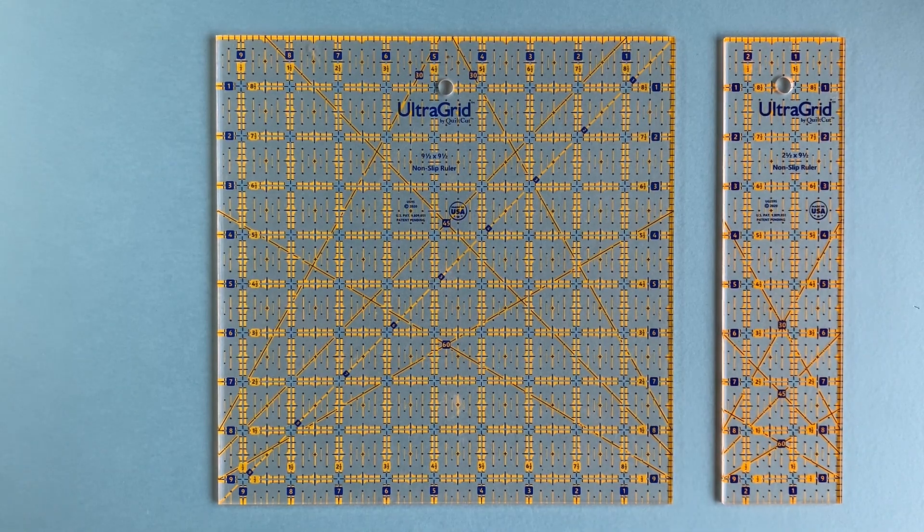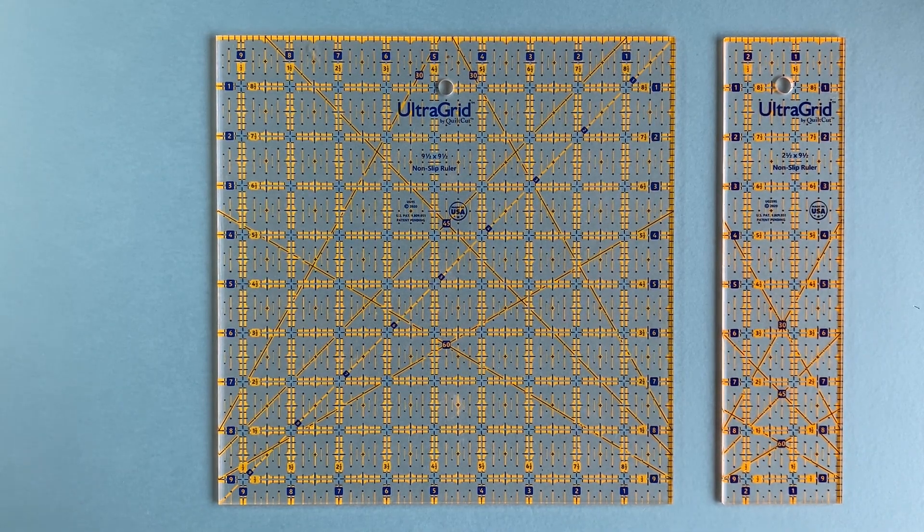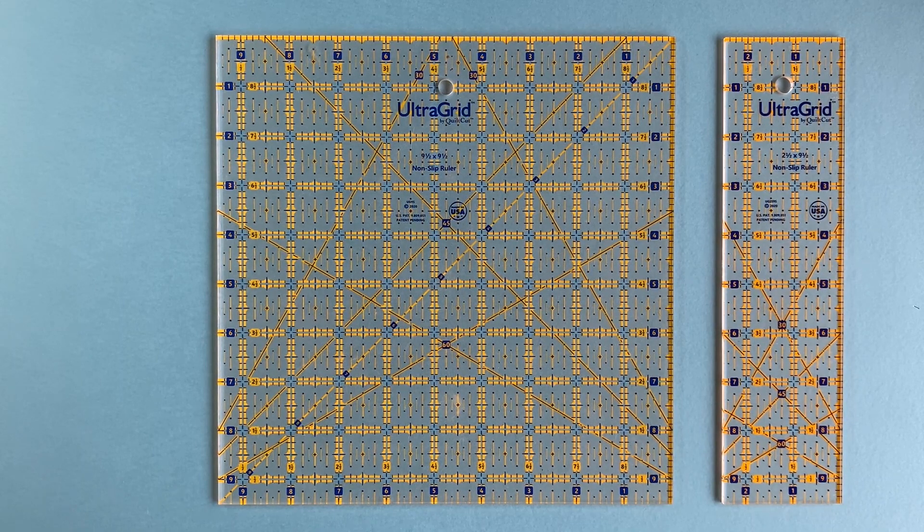Our rulers are screen printed on optical grade 1 eighth inch thick laser cut acrylic, providing a smooth, continuous, vibrant look.